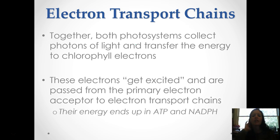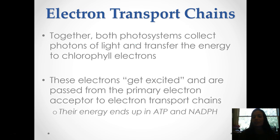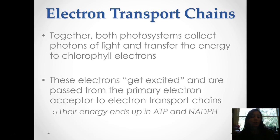Let's talk about those electron transport chains. Together, both of these photosystems collect photons of light and transfer this energy to the electrons of chlorophyll. Now these electrons get excited, and they're passed from the primary electron acceptor to these electron transport chains. This energy is what ends up in ATP and NADPH.